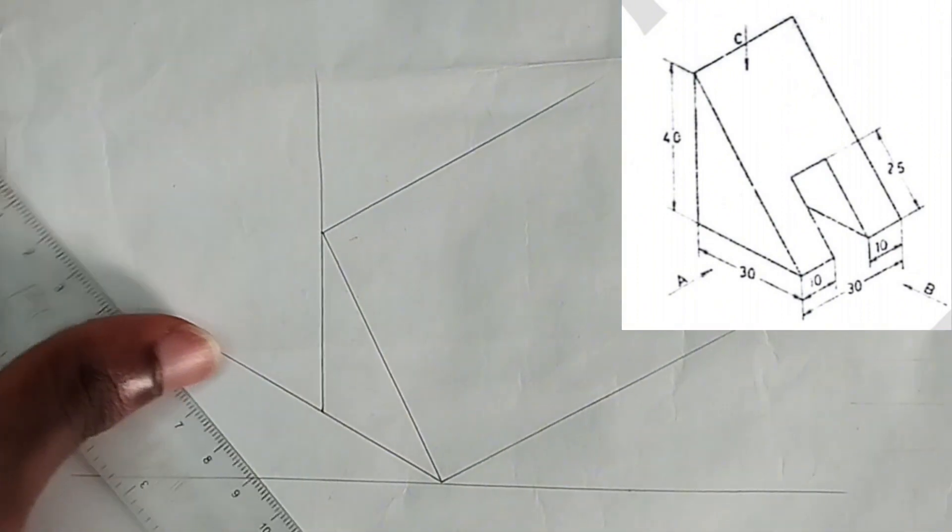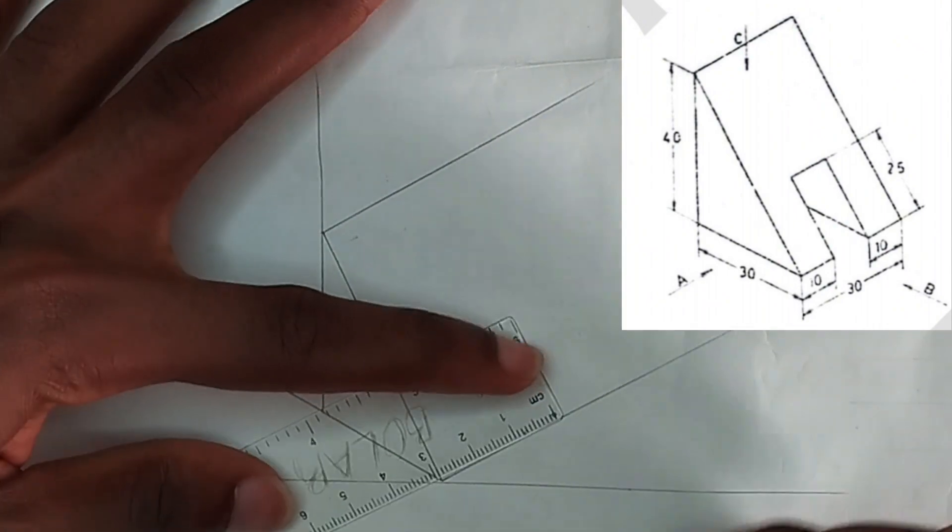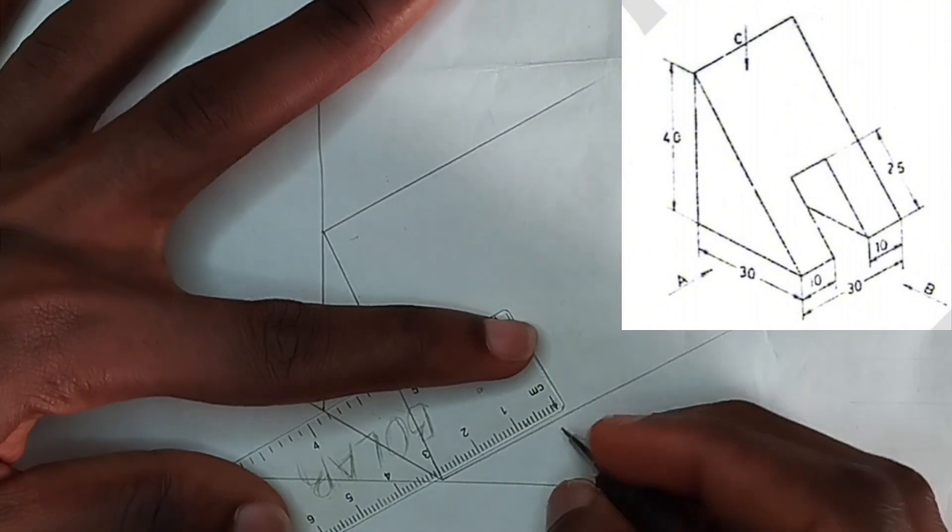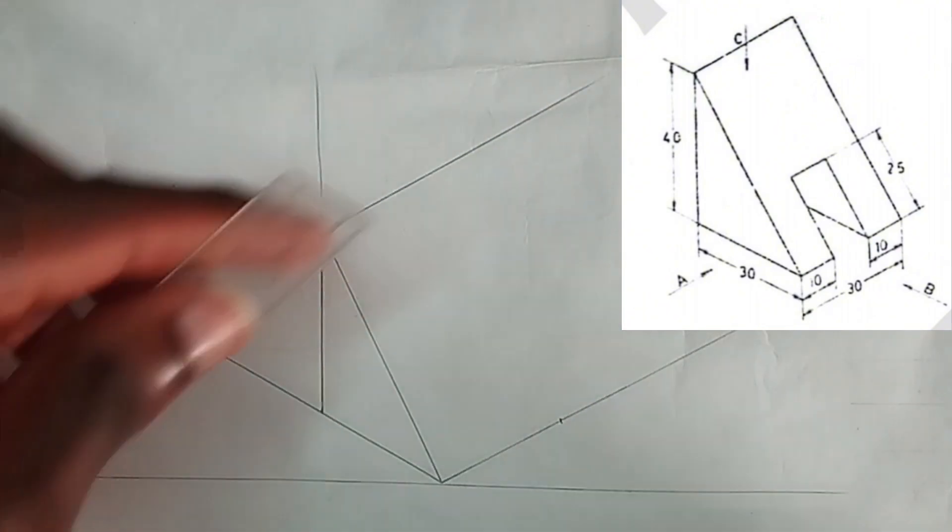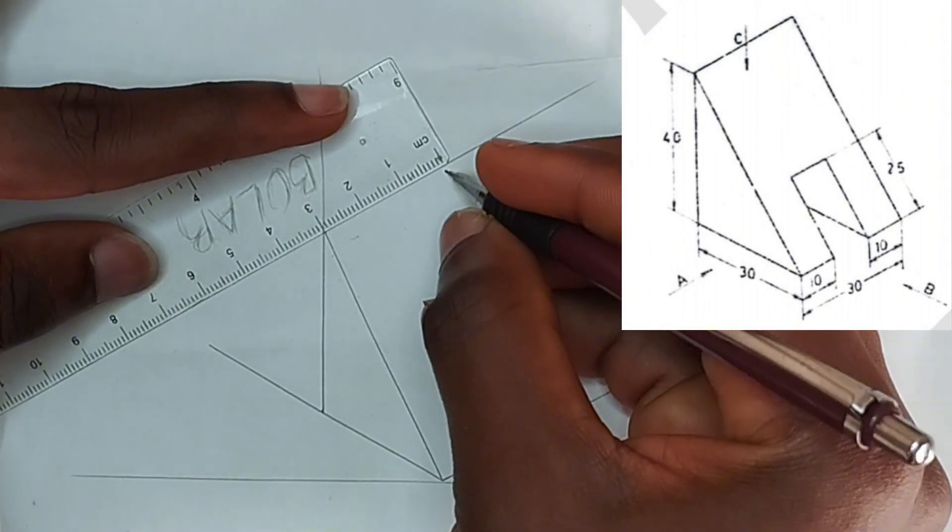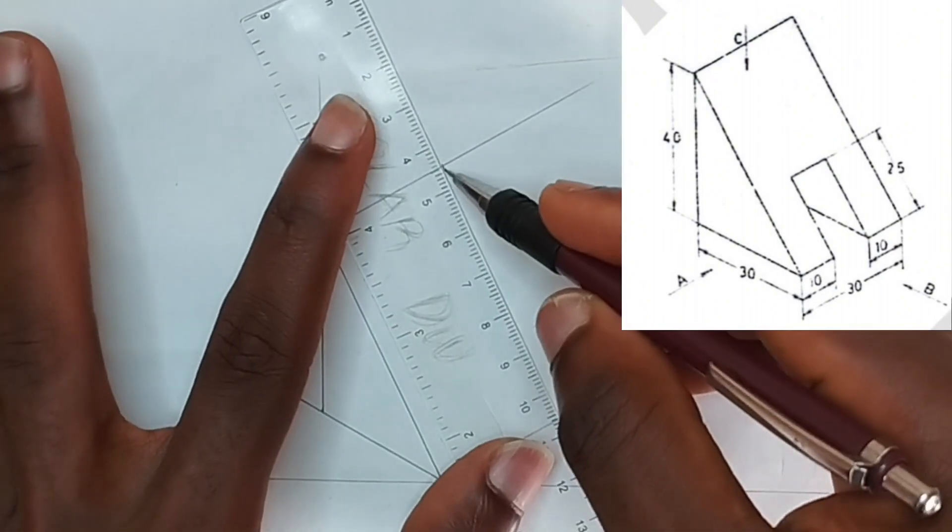As we can see here, from here to here as you can see it's 30, that's 30 millimeter. So we'll pick our 30 millimeter first and then we pick 30 millimeter here also using our ruler. So we join these two points together like this.